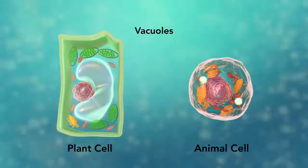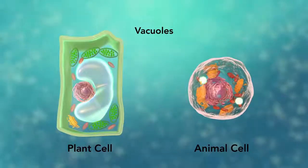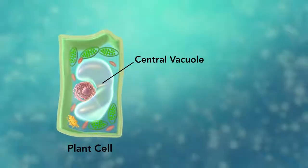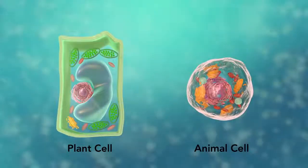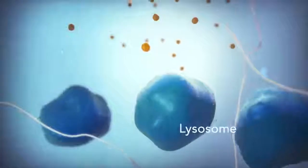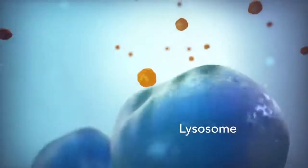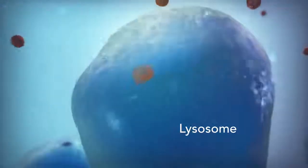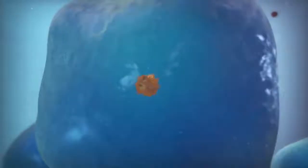Vacuoles are sac-like structures that store different materials. Here, in this plant cell, the central vacuole stores water. Going back to the animal cell, you will see an organelle called a lysosome. Lysosomes are the garbage collectors that take in damaged or worn-out cell parts. They are filled with enzymes that break down this cellular debris.